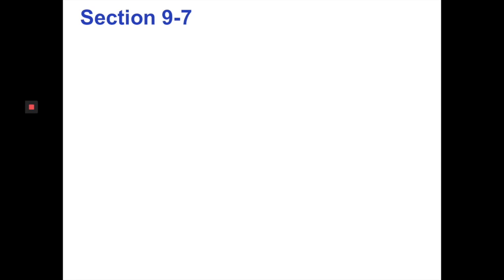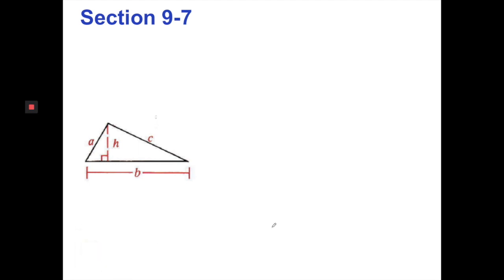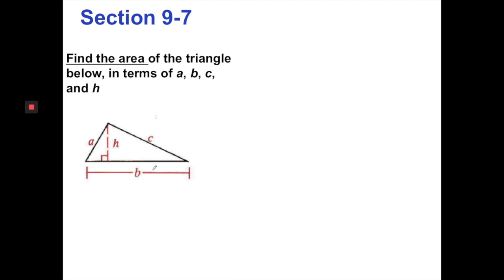Let's go ahead and drop in that generic triangle. Here we have a base B, a height H labeled, and some sides A and C. Find the area of the triangle in terms of A, B, C, and H. We only have one altitude, so we must use it with this base. The area of this triangle is one-half base times height — area equals one-half BH.